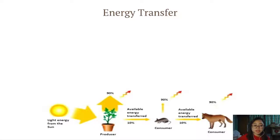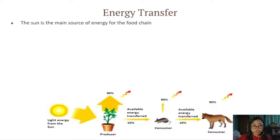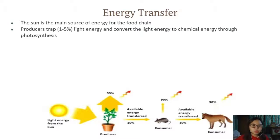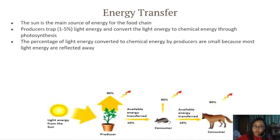Let's talk more about energy transfer. The sun is the main source of energy for the food chain, supplying energy to the producers. The producers will trap 1 to 5% of that light energy from the sun and convert the light energy to chemical energy through photosynthesis. The percentage of light energy converted to chemical energy by producers is small because most of the light energy is reflected away.